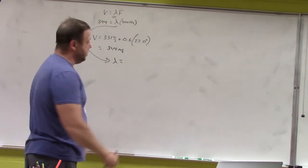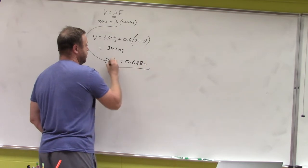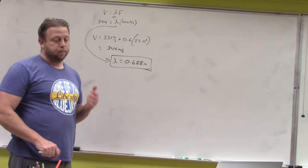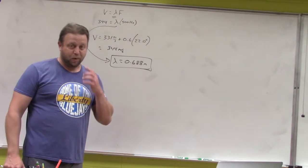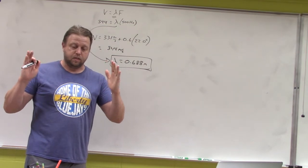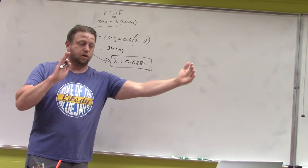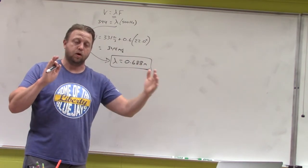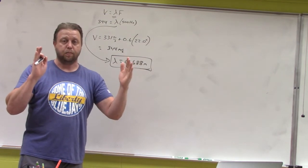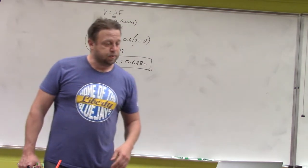Lambda works out to 0.688 meters. Remember these aren't transverse waves — they are compressions. The sound wave has a region of compression propagating along its length as it moves outward, so we're talking about roughly 0.7 meters between compressions of the air molecules as that sound wave travels.